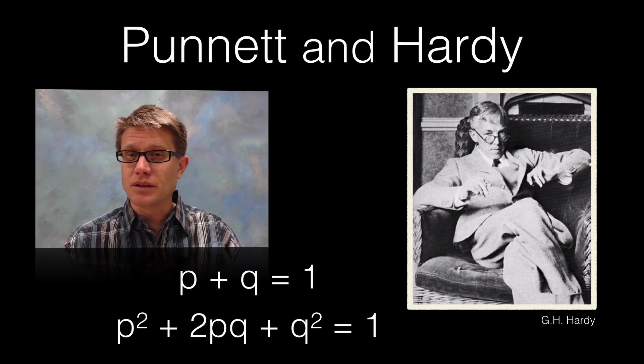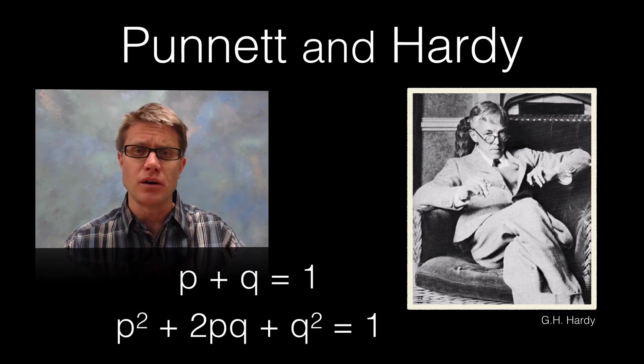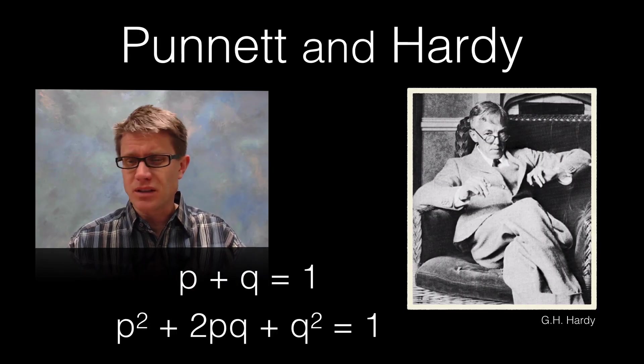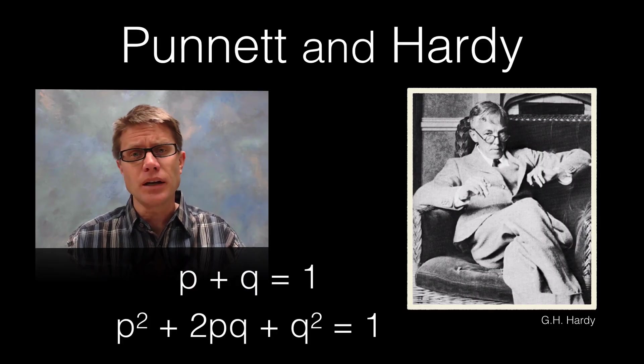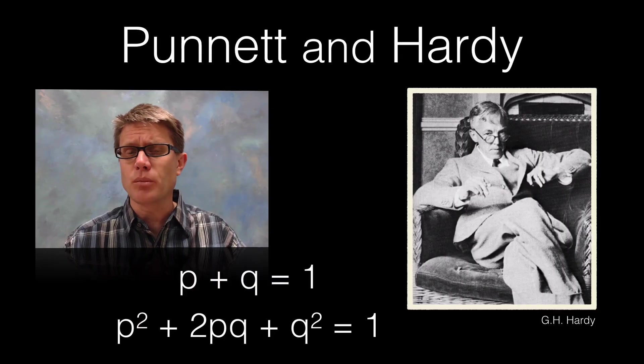Now when you get to Hardy and Weinberg this is really a confusing kind of a concept. And students struggle with it all the time. It's got a couple of equations. But they never know what's the allele frequency, what is the phenotype. And so by combining these two, the work of Hardy and Weinberg and also these Punnett squares you get a more powerful model.